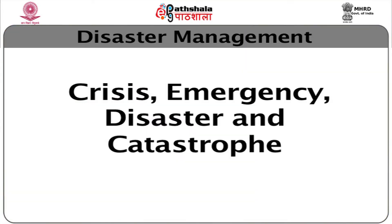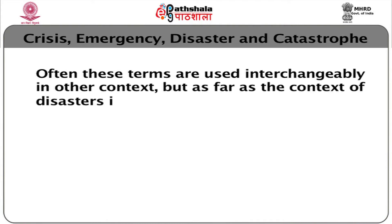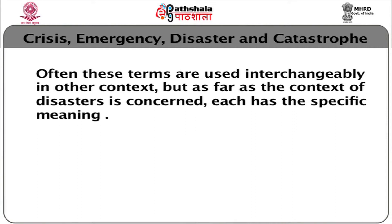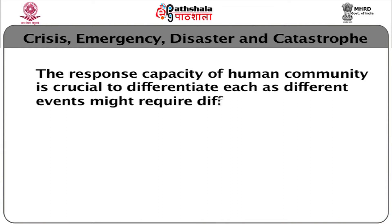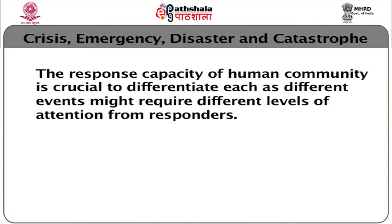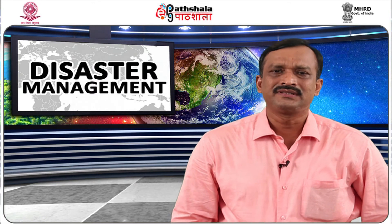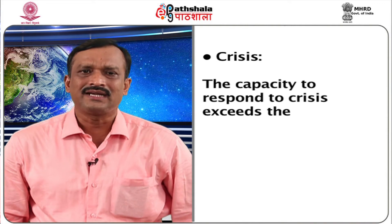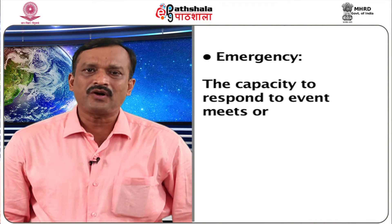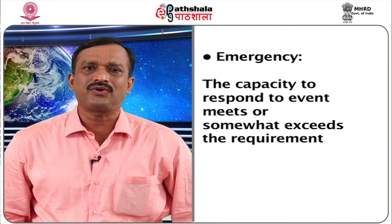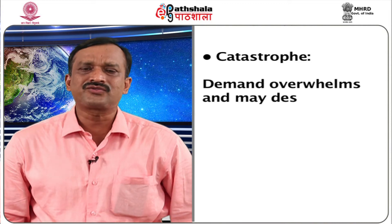Now, let us talk about the terms crisis, emergency, disaster and catastrophe. Often these terms are used interchangeably, but in the context of disasters, each has a specific meaning. The response capacity of a human community is crucial to differentiate each. On the basis of the level of resources required to handle events, they are classified as follows: Crisis — the capacity to respond exceeds the requirement with capacity to spare. Emergency — the capacity to respond meets or somewhat exceeds the requirement. Disaster — event requirement exceeds capacity. Catastrophe — demand overwhelms and may destroy capacity.